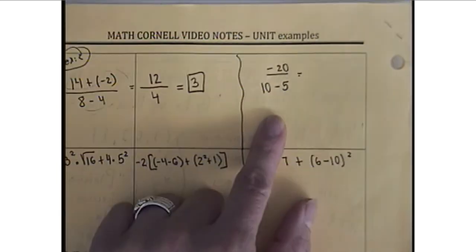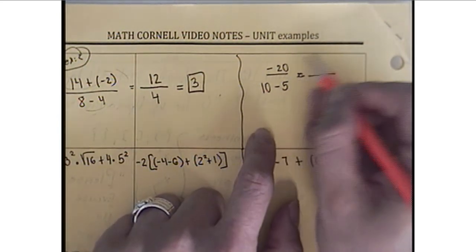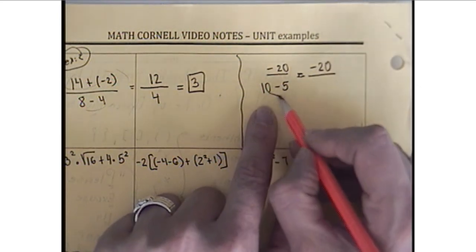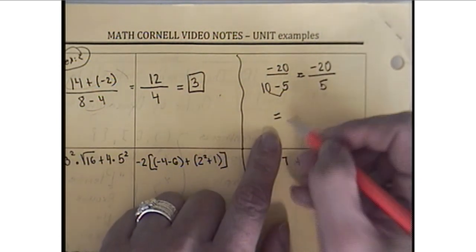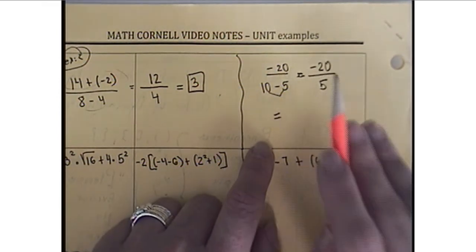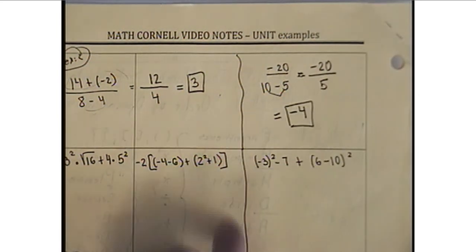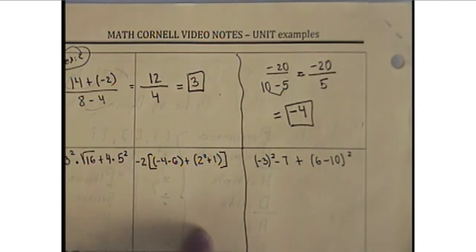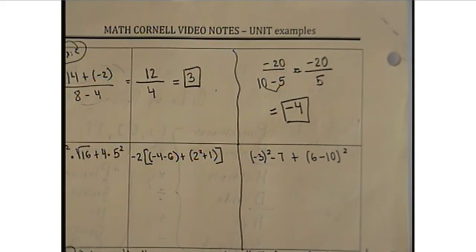Same thing with this negative 20 on the top. Since we don't have any other number to add or subtract or multiply or divide here, we just copy negative 20. And the bottom is 10 minus 5, which is 5. So now the answer negative 20 over 5, you can always calculate that on the calculator, negative 20 divided by 5. This will give you a negative 4 final answer. I'm going to leave some of those examples for in-class practice work. I think we can do some of those together.